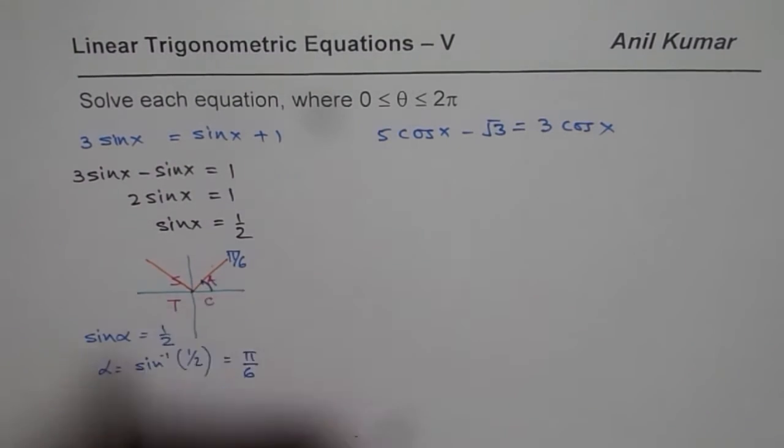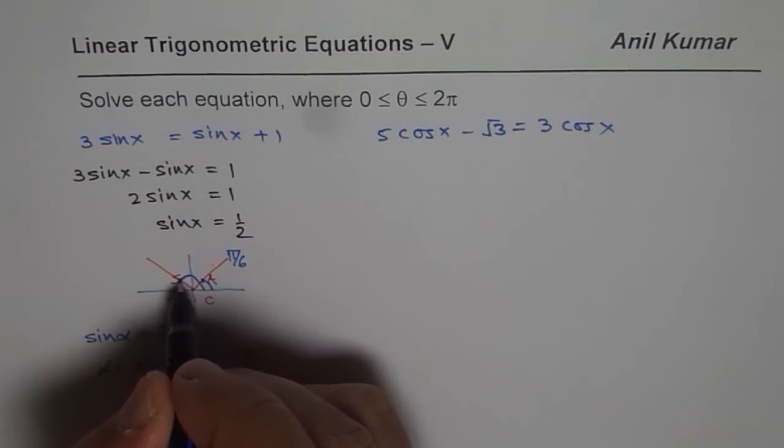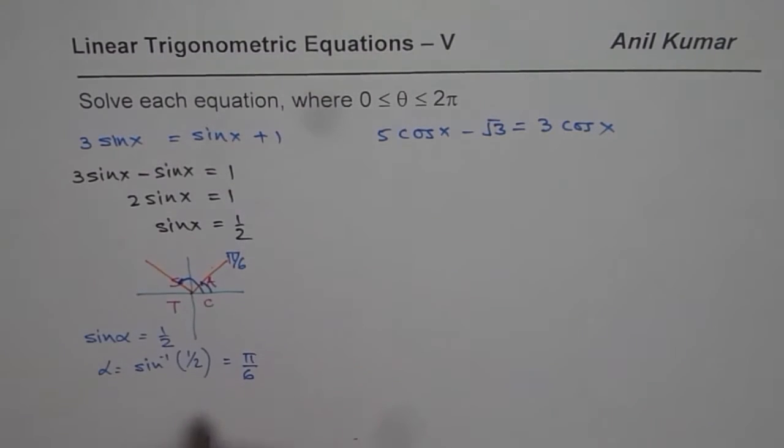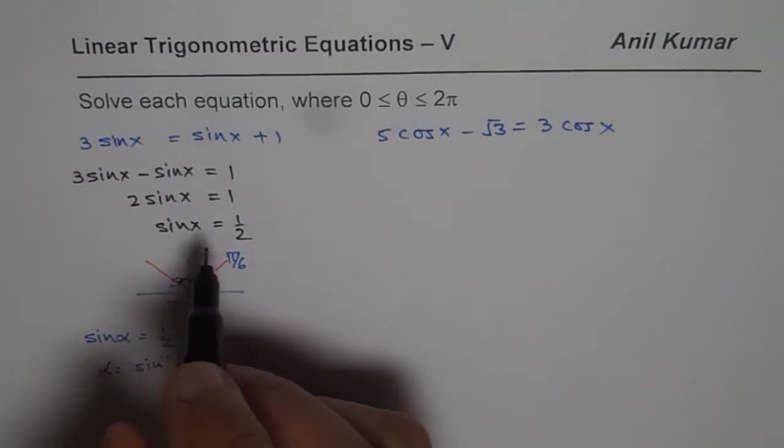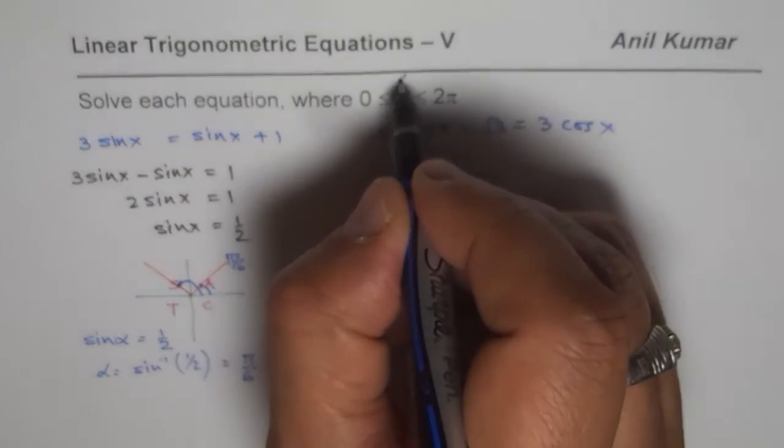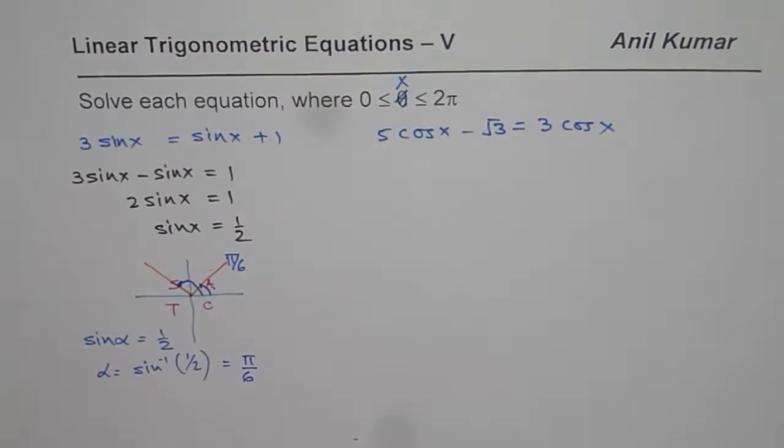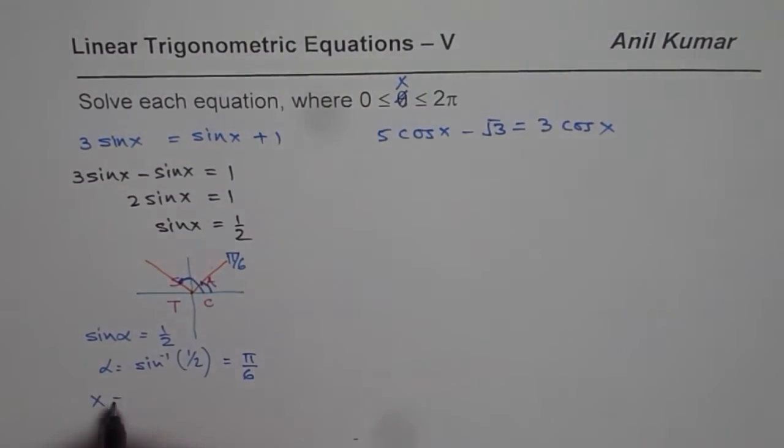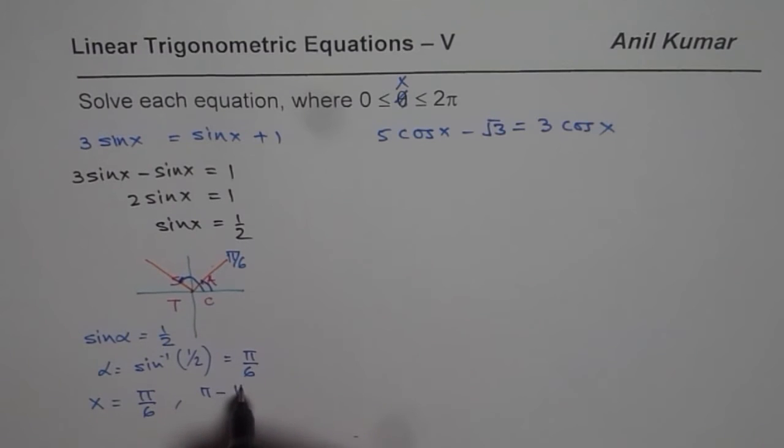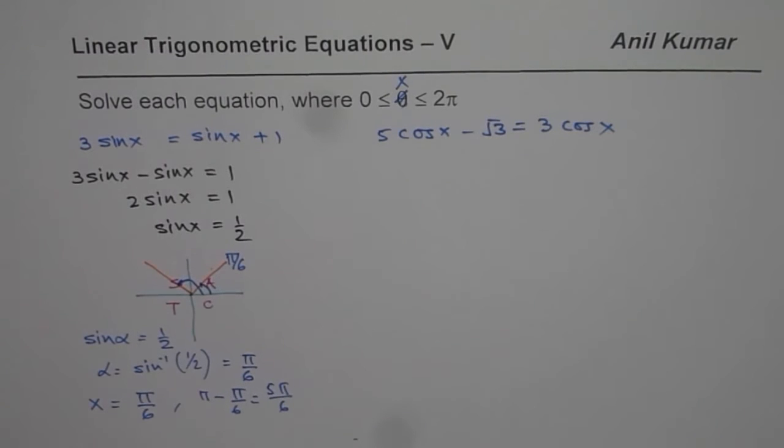So this is one of the solutions. The other one is pi minus pi by 6. So those are the angle x. So I am actually writing this as x instead of theta here. So angle x equals pi by 6, that is in quadrant 1. And the other one is pi minus pi by 6, which equals 5pi by 6. So these are the two solutions for the given equation.